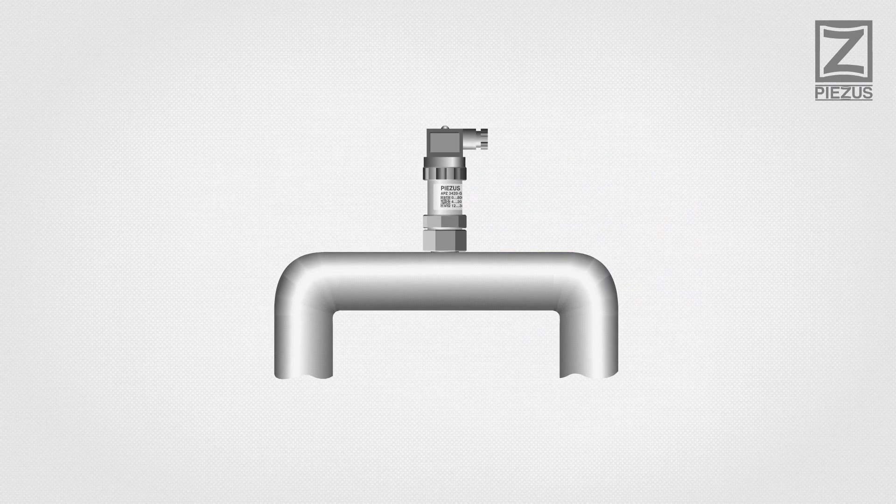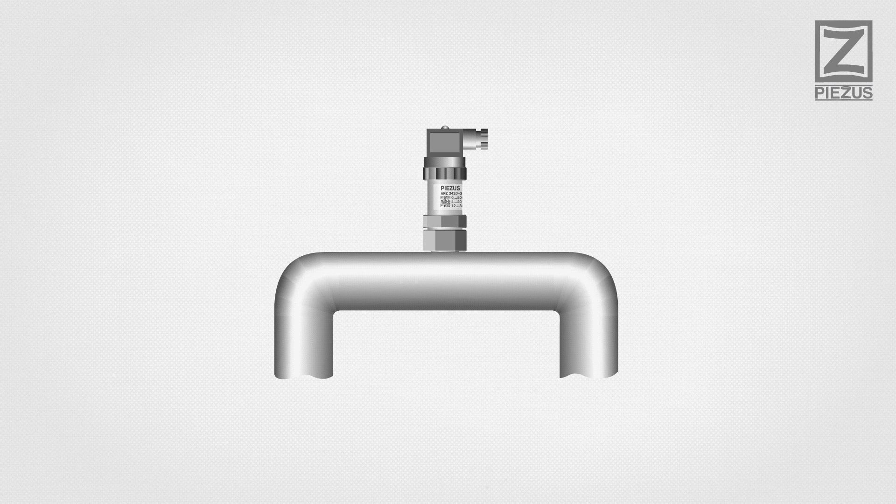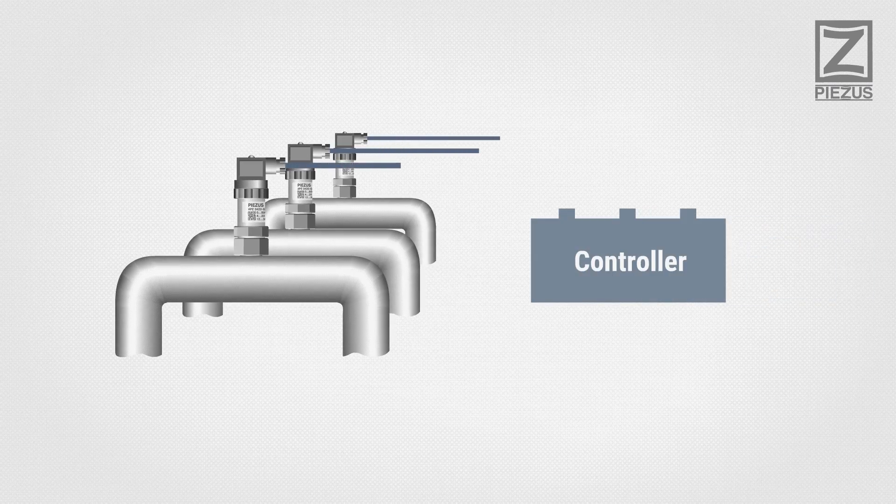Electronic pressure transmitters are widely used in today's industrial pressure measurements. Within such a device, pressure is converted to electrical signal, which is then transmitted to a control system or to the computer.